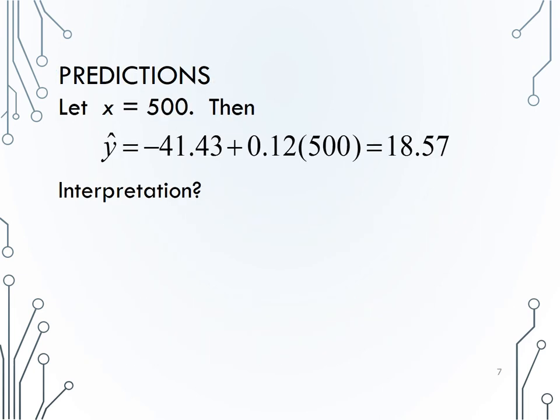Now let's use the line to make predictions. What if there were 500,000 powerboat registrations, or x equals 500? Then, we can plug 500 into our equation, and we get y-hat equals 18.57. How would we interpret that value?